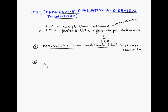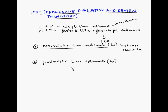The second time estimate is the pessimistic time estimate, also denoted as TP. This is the longest possible time estimate of an activity, and it is based upon the worst case scenario of the activity.